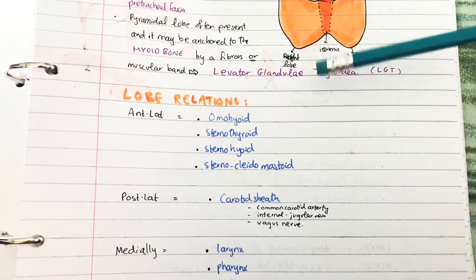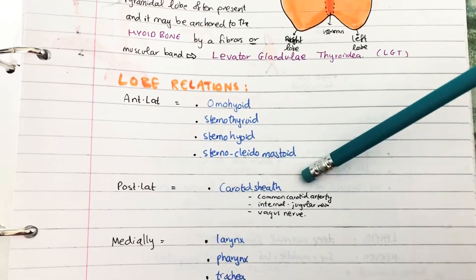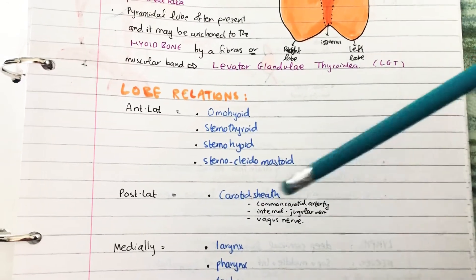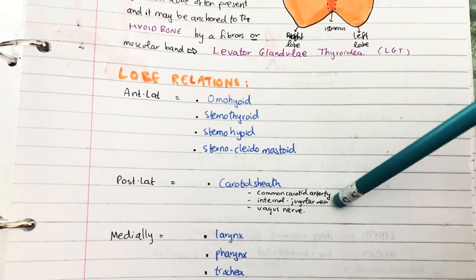Posterolaterally, you have the carotid sheath which has the common carotid artery, the internal jugular vein, and the vagus nerve.